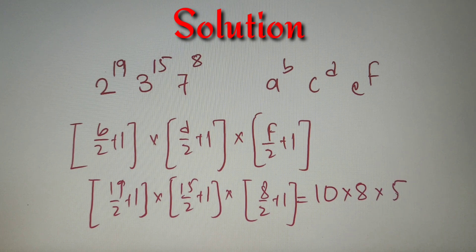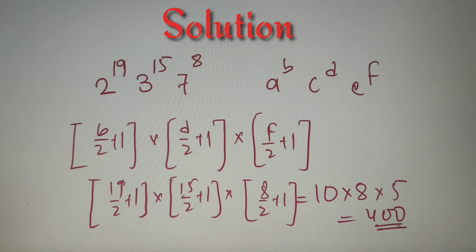So we'll get 10 into 8 into 5, which finally gives us a result as 400. So the number of perfect square factors for the given number is equal to 400, and according to the given option it is option number C. The final answer is option number C, 400.